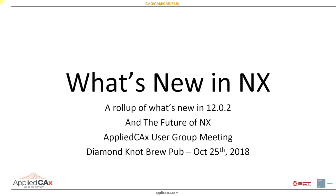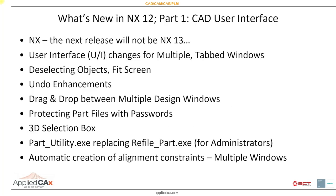NX12 originally came out November 17th last year, so it's been out roughly a year. It's now up to 1202. We're going to take a look at what's rolled up in NX1202, as well as the future of NX. What is NX12 now? What's going to be next? It's going to be NX13 — actually, we're just going to drop the number and just call it NX.